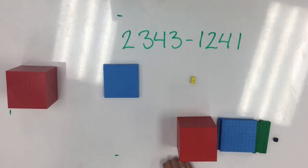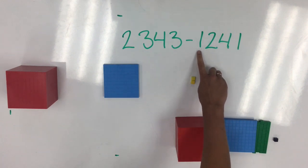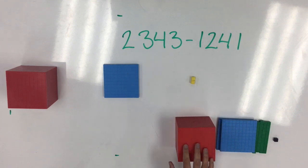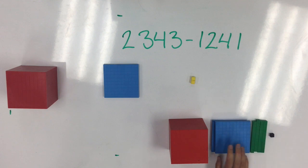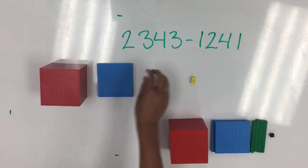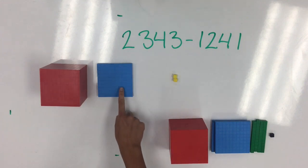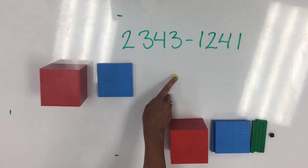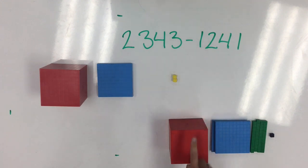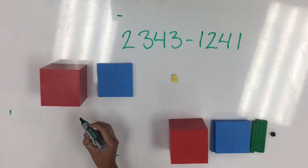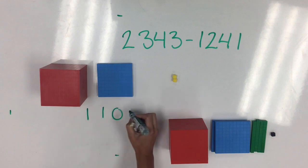I can check to make sure that I have taken away the proper amount by looking at my number here, 1,241, and seeing if it matches down here, 1,241. I have taken away the proper amount, so my final number is 1,102. So, 2,343 take away 1,241 leaves me with a final answer of 1,102.